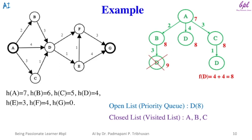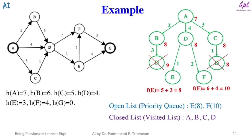Now in the open list there is only one node, which is node D, so it will be selected. It is not a goal node, so it will be explored and added to the closed list. D has two successors: node E and node F. f(E) = 5 + 3 = 8 and f(F) = 6 + 4 = 10. These two nodes will be added to the open list. E has the smaller evaluated value, so it will be selected.